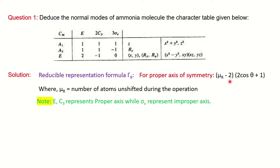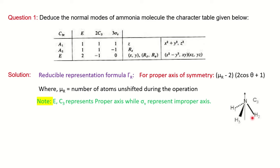For the solution, we apply the first formula for proper axis of symmetry. In this character table you can notice three symmetry operations: identity (E), the principal axis of rotation (C3), and the vertical plane of symmetry (σv). The first two — E and C3 — represent proper axes of symmetry, and the vertical plane represents an improper axis of symmetry.